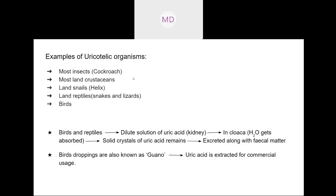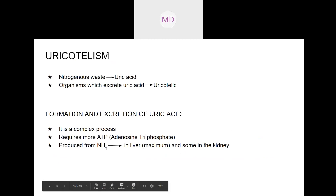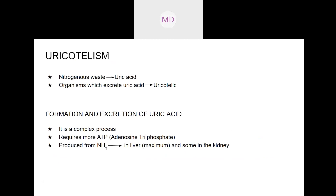The example of uric acid excretion I gave earlier is lizards. Lizards are uricotelic organisms. Other examples of uricotelic organisms include insects, crustaceans, snails, reptiles, and birds. Uricotelic organisms excrete uric acid as their primary nitrogenous waste.